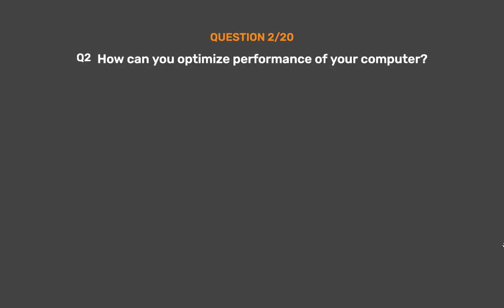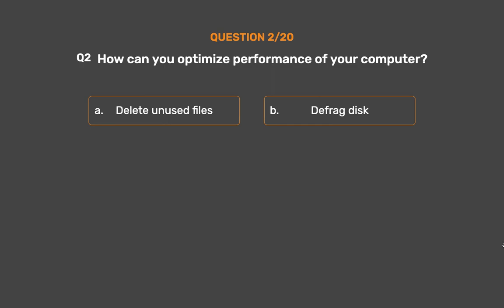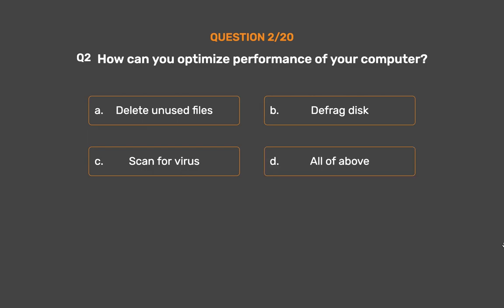Question number 2. How can you optimize performance of your computer? Option A: Delete unused files. Option B: Defragment disk. Option C: Scan for virus. Option D: All of the above.